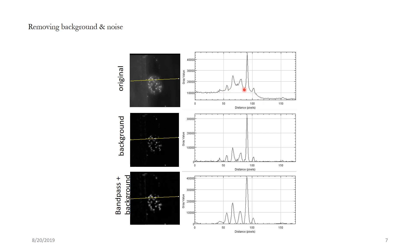Even after rolling ball subtraction, we still have some bit of noise. We can use an algorithm called band pass filter, which can remove high frequency noise and make the signal very smooth. Let's see what the different methods are for smoothing the signal as well as removing the background.